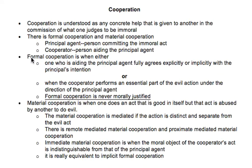Formal cooperation has two forms. The first is when you aid the principal agent fully — meaning you agree explicitly or implicitly with the principal's intention. So if my friend Fred asks me to rob the bank and I say yes, I want in for 30% of what's stolen, I'm explicitly agreeing. Or I might implicitly agree by simply participating without objection. Either way, in terms of intent, I agree with what's going on.